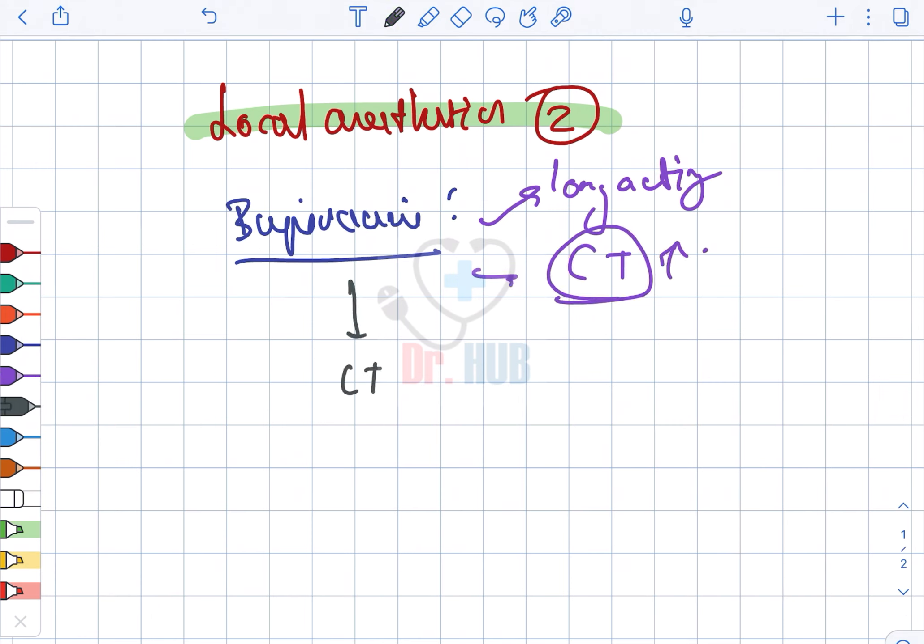There is a contraindication - bupivacaine is contraindicated in case of regional IV anesthesia.